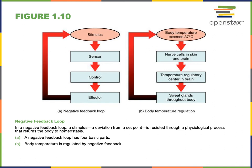The sensor detects the stimulus and then relays information through what we call the input or afferent pathway to the control center. The input or afferent pathway is a way for information to be communicated from the receptor to the control center. The control center is a structure that analyzes information coming from the sensor and then determines the appropriate responses needed to maintain homeostasis.